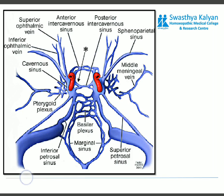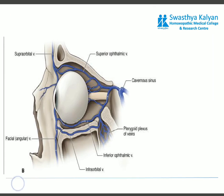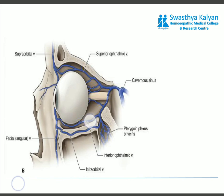To summarize the communications: the superior petrosal sinus connects the cavernous sinus with the transverse sinus; the inferior petrosal sinus connects it with the internal jugular vein; emissary veins connect it with the pterygoid plexus; and both cavernous sinuses are connected by the anterior and posterior intercavernous sinuses and the basilar plexus of veins. These communications are also responsible for transferring infection to the cavernous sinus. The orbital tributaries — the superior ophthalmic, central retinal, and inferior ophthalmic veins — are also shown draining into the cavernous sinus.